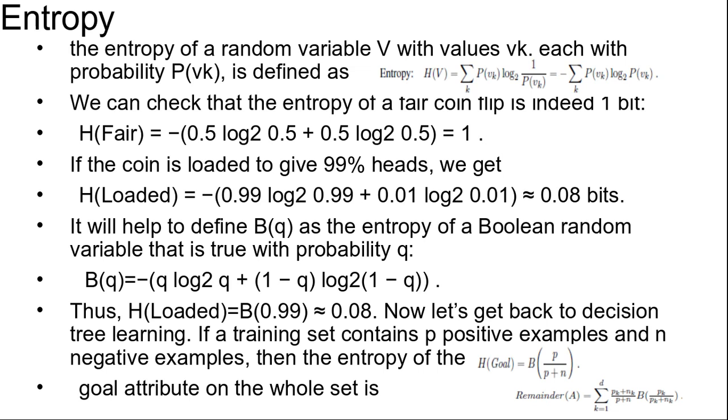The entropy of a random variable V with value VK each with probability VK is defined as: H(V) is equal to summation of probability VK log2 divided by probability of VK, which equals minus summation probability of VK times log2 probability of VK.